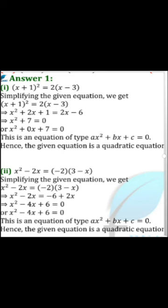(x + 1)² = 2(x - 1). Simplifying the given equation we get x² + 2x + 1 = 2x - 2. This is a quadratic equation. Here, a = 1, b = 0, and c = 7.